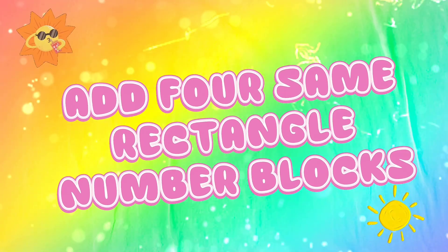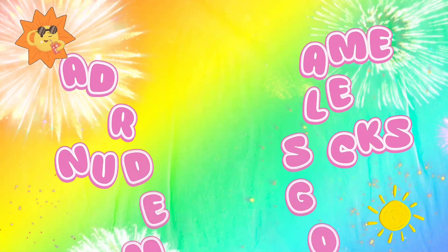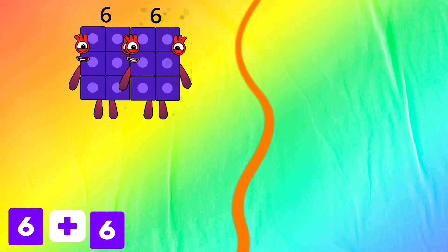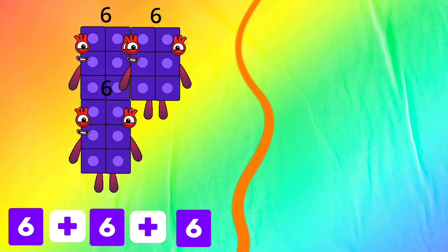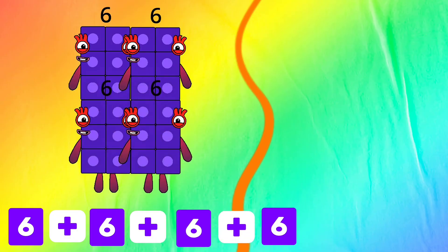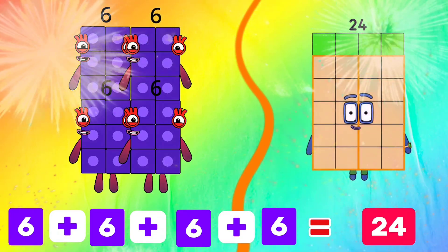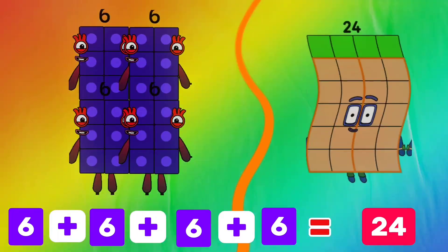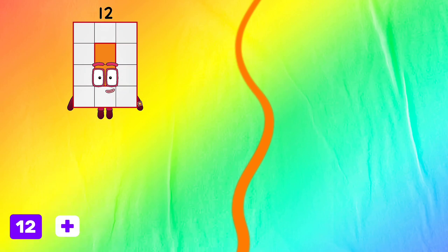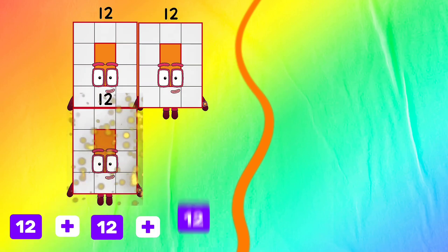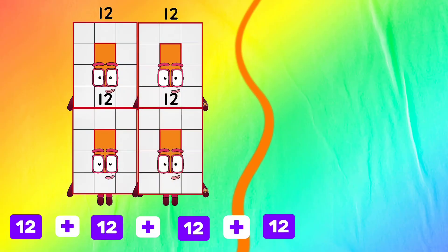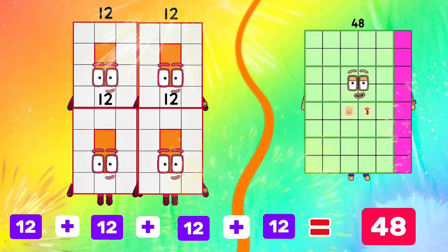Add four same rectangle number blocks. Six plus six plus six plus six equals twenty-four. Twelve plus twelve plus twelve plus twelve equals forty-eight.